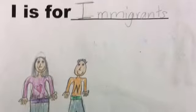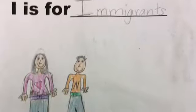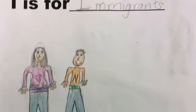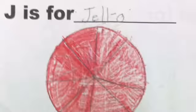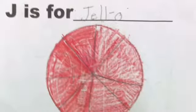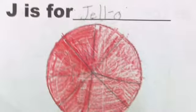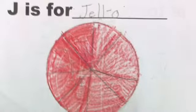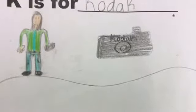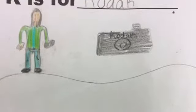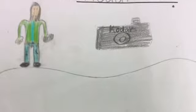I is for Immigrants because immigrants risked everything to come to America. J is for Jell-O because a carpenter from Leroy invented this jiggly treat. K is for Kodak because the Kodak camera was patented in 1888.